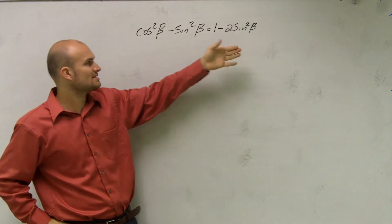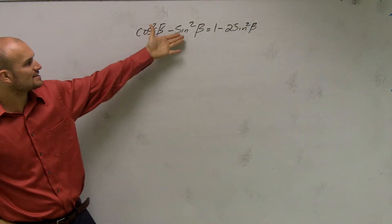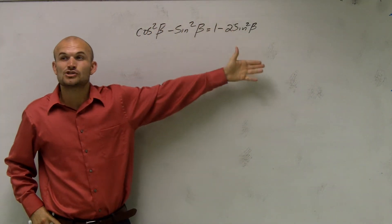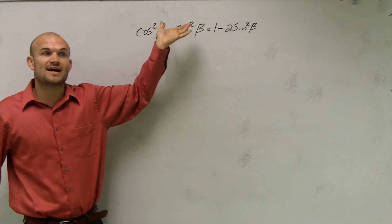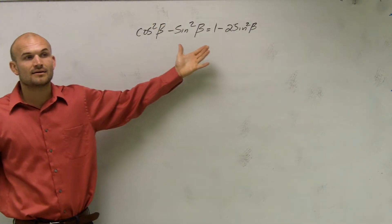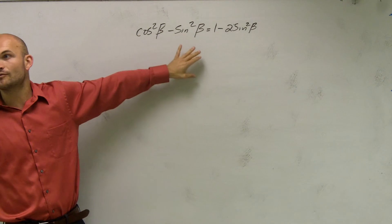What I can do, though, is notice that this has a cosine and a sine, and this just has a sine. So if I could rewrite my left side just in terms of sine, I might be able to do something with that.